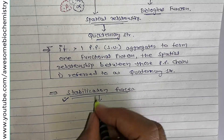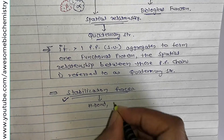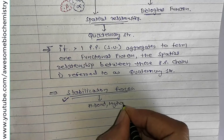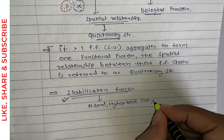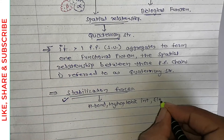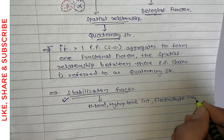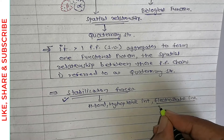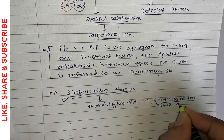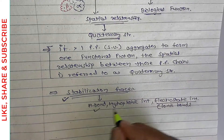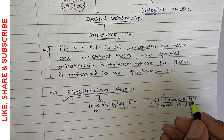In the case of quaternary structure, all the stabilization forces are non-covalent type. The first one is the hydrogen bond. The second is hydrophobic interaction. The third is electrostatic interaction, which is also called ionic bond. All these stabilization forces were explained in the video on tertiary structure of protein.